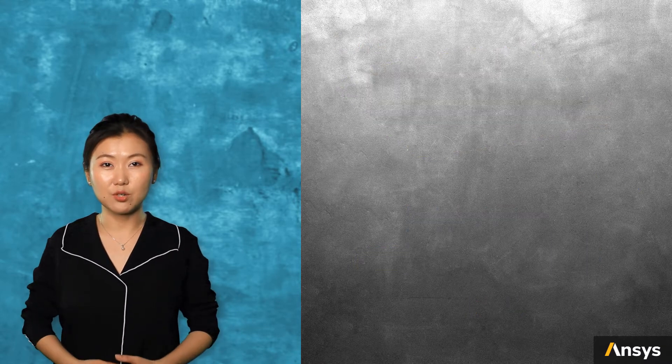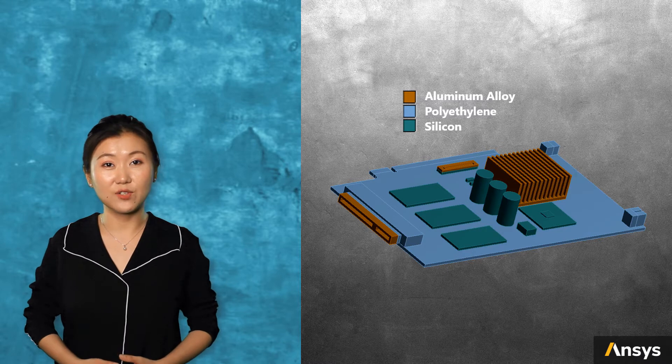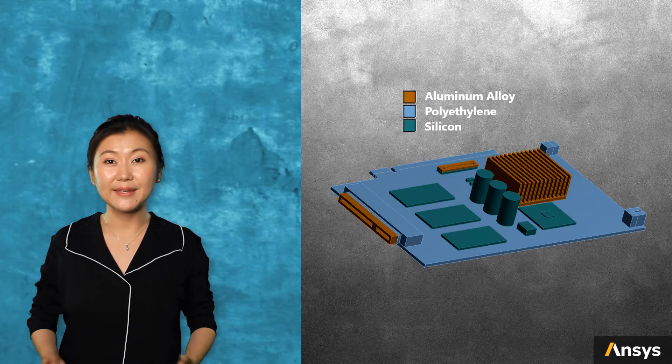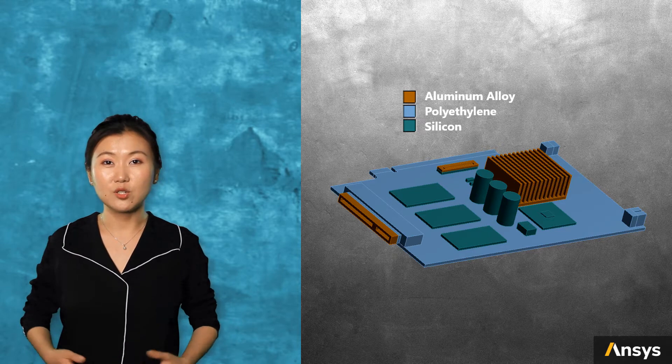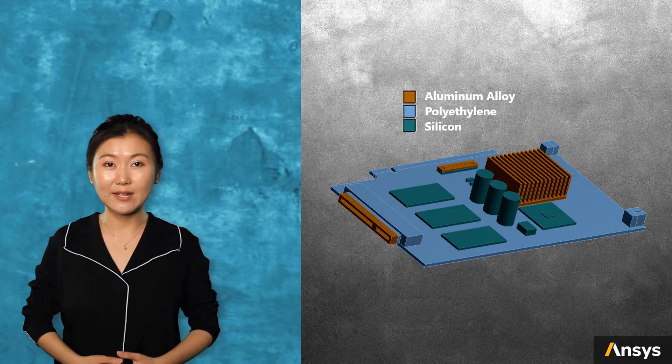There are three different materials for this GPU board, and they have different coefficients of thermal expansion. We use aluminum alloy for the slot part and the heat sink. We use polyethylene for the board and we use silicon for electric components.